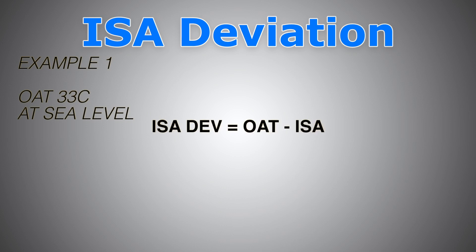Now let's do some math and see how to calculate ISA deviation. We have the first example here, outside air temperature of plus 33 and at sea level. So there's no elevation. So here is the formula: ISA deviation equals outside air temperature minus ISA.